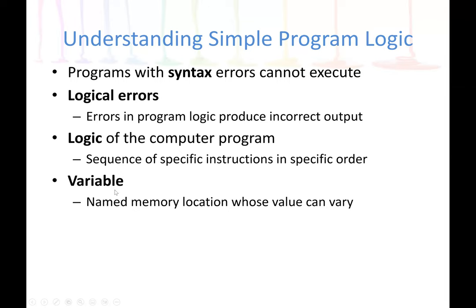A variable is a memory location where we can store data. For example, in Java, we may declare a variable and have to specify the type, then we can store data there. When we declare a variable, we don't need to worry about the location in memory — this is handled by the operating system. All we need to do is declare the variable and specify the data type, which is the type of data we are going to store — whether numbers, characters, decimal values, etc.